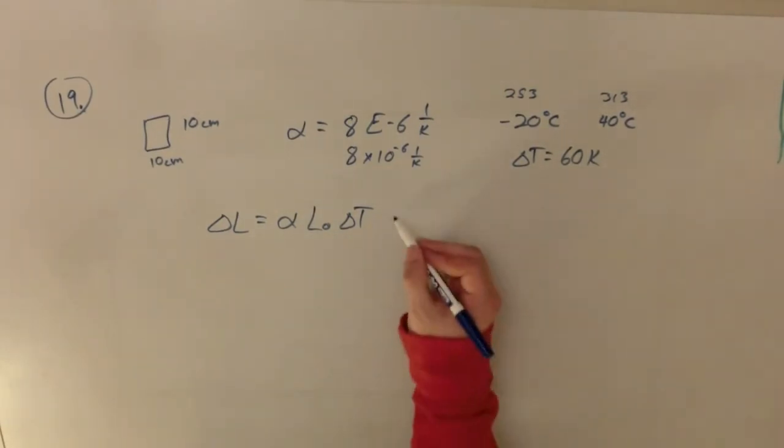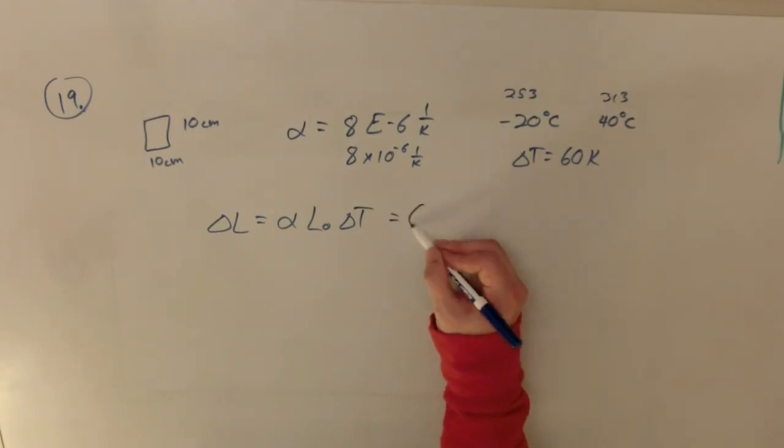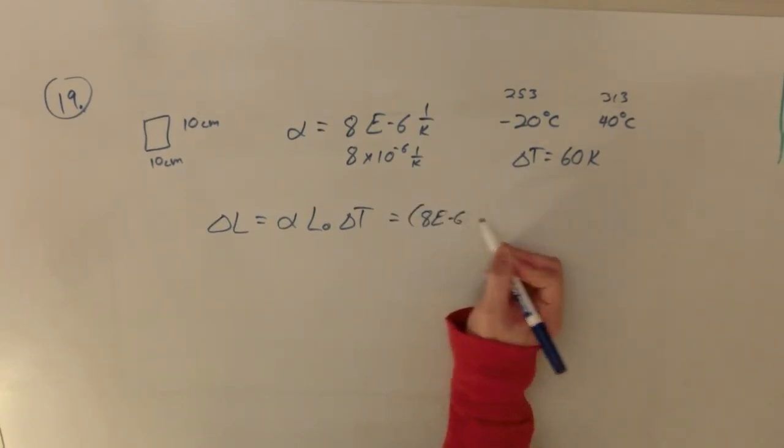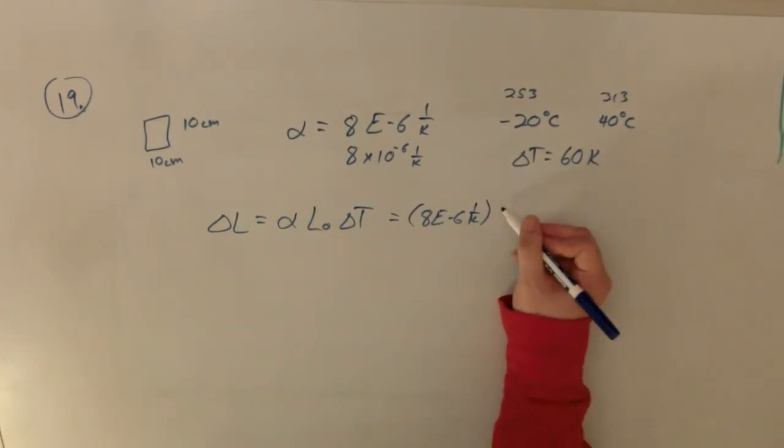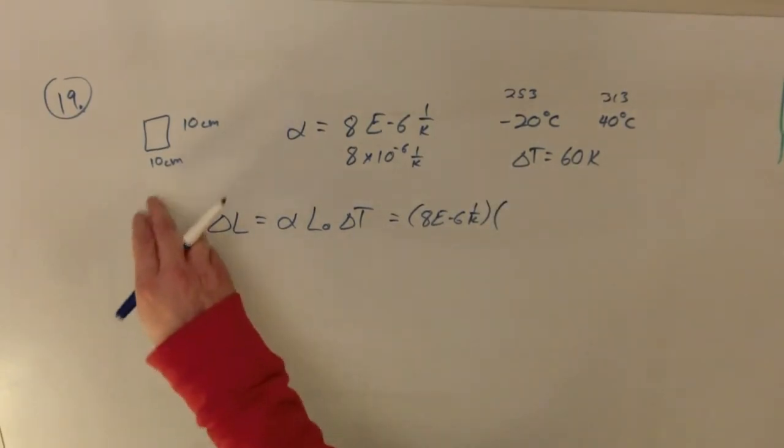So now when I put these things in, I'm going to do alpha, which is 8 times 10 to the negative 6th, 1 over Kelvin, all right, times our length. Well, the length of one of our tiles is 10 centimeters, but, oh, I'm sorry, I may have the wrong units on that. No, no, that's fine. I'm thinking of the next one. That's fine.